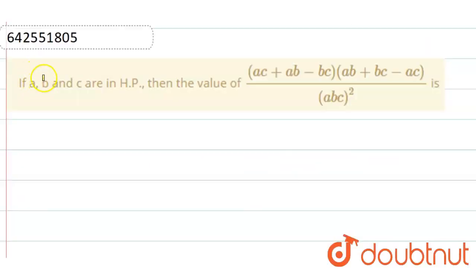Hello friends, the question is: if A, B, C are in HP, then the value of (AC + AB - BC)(AB + BC - AC) divided by (ABC)² is?